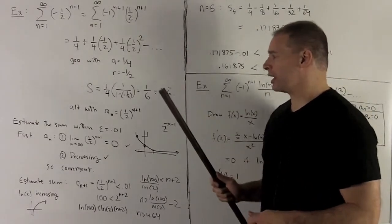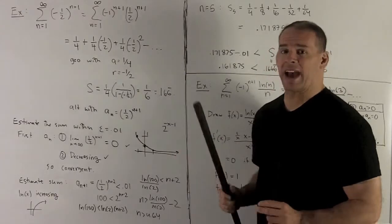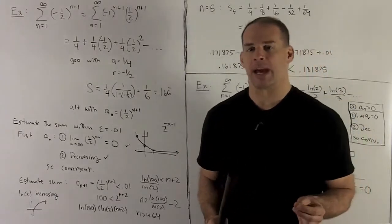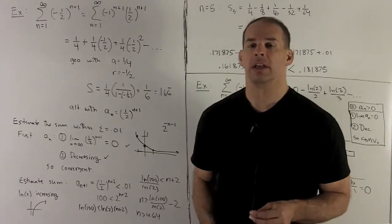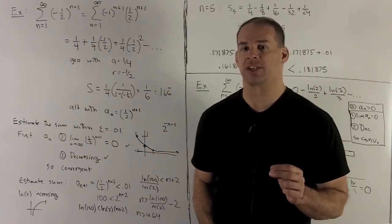Also note, we know this converges because r is equal to minus 1 half. Absolute value of minus 1 half is 1 half, which is strictly less than 1. So geometric series test says convergence.